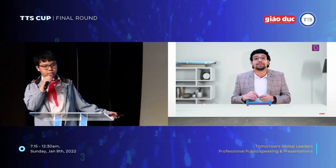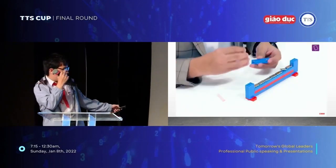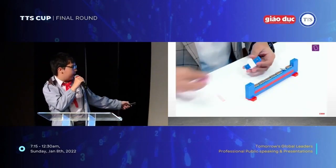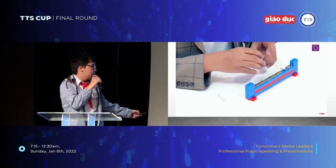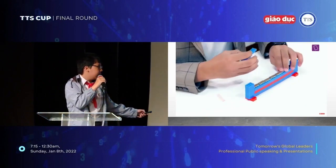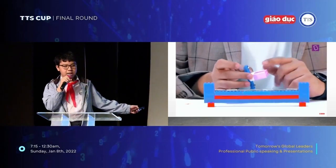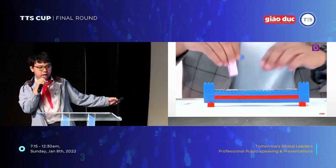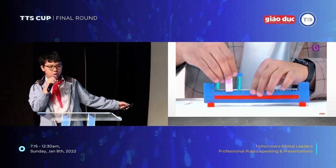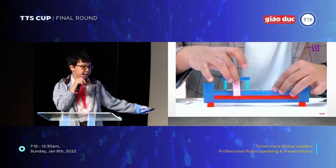So how do we fix this problem? We will add a guide rail at the bottom of the hyperloop so that it will balance the hyperloop and the hyperloop won't get flipped out of the road again.